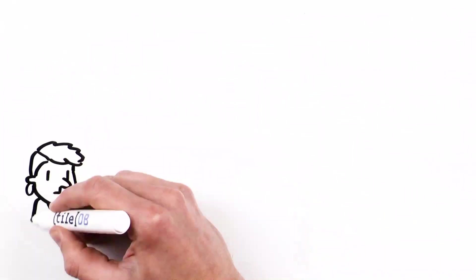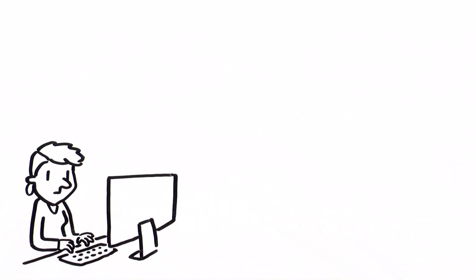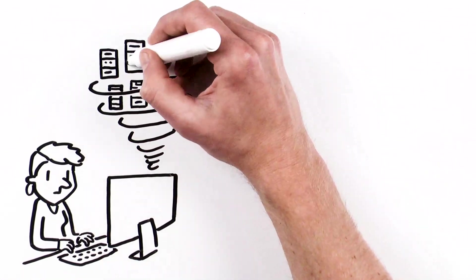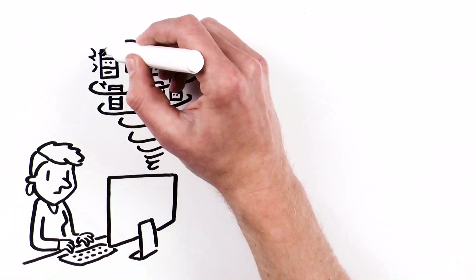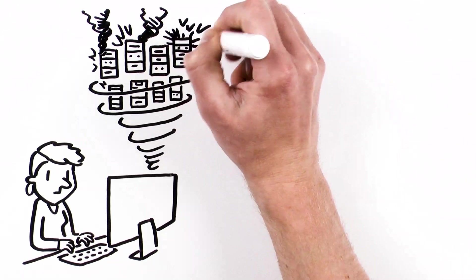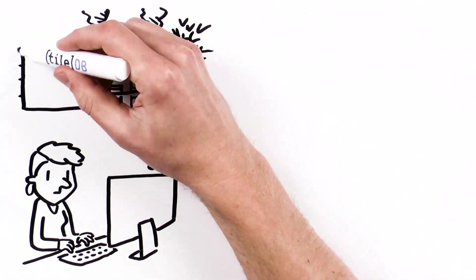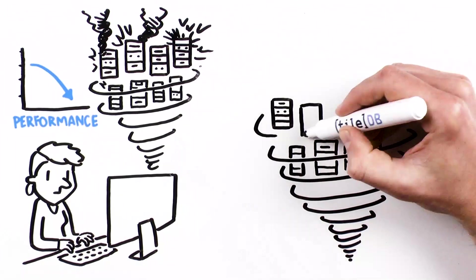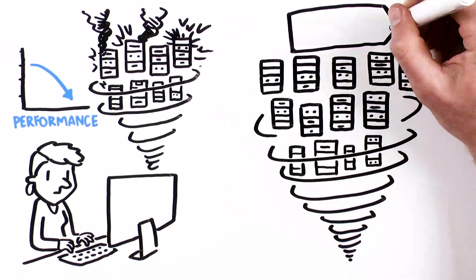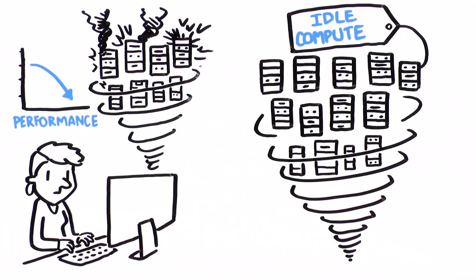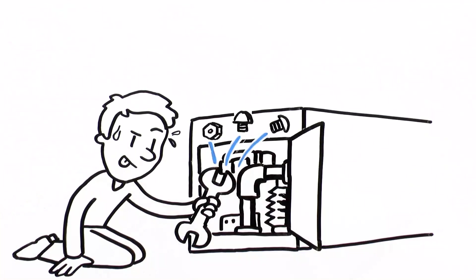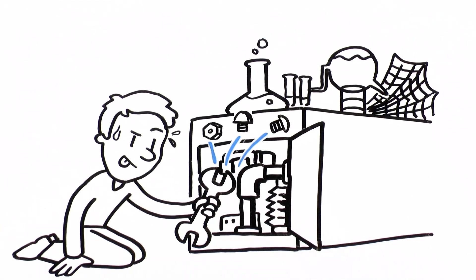Finally, to compute at scale, you spin up clusters, deploy tools, and monitor resources. In addition, you either under-provision and performance suffers, or you over-provision and end up paying for idle compute. You spend too much time on engineering and much less on science.